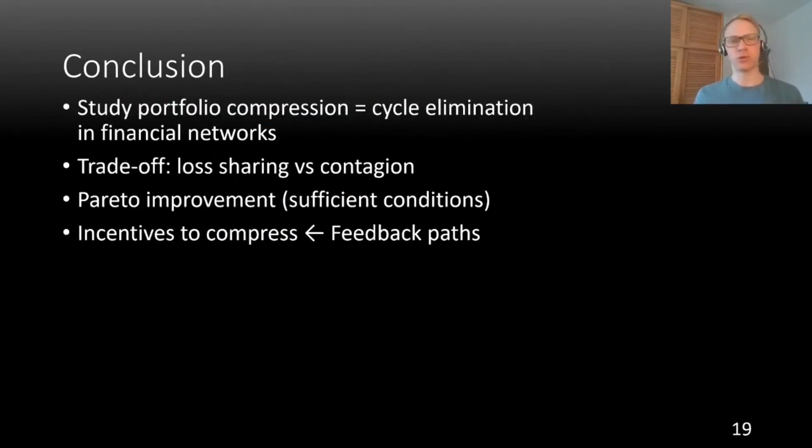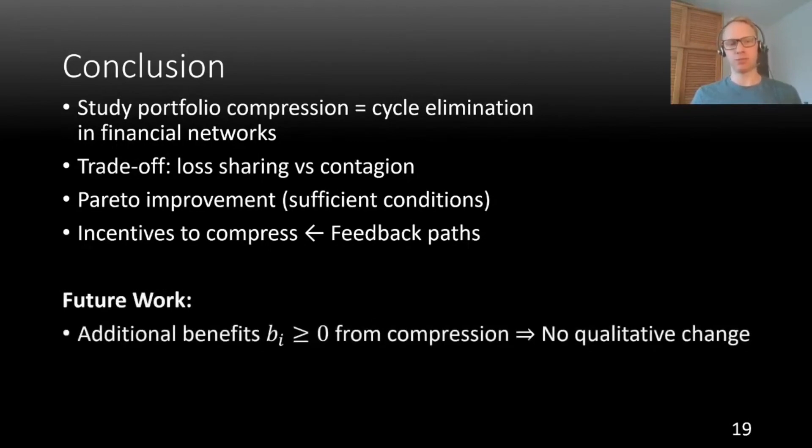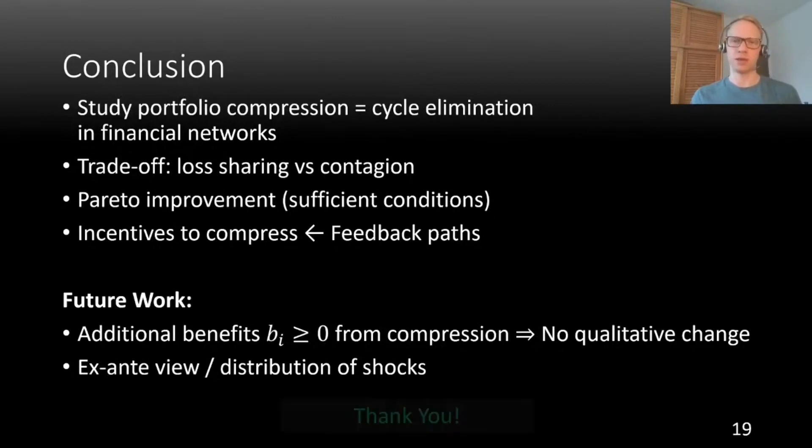To conclude, today I have talked about portfolio compression, which is the elimination of cycles in financial networks. I have shown that, contrary to conventional wisdom, portfolio compression is not always beneficial for everyone, but there is a trade-off between loss-sharing and contagion. I have shown to you that we can find sufficient conditions under which compression is a Pareto improvement, and I have shown to you that the incentives to compress for banks depend on the presence of feedback paths in the network. I briefly want to talk about two pieces of future work. One might include in the model some additional benefits banks derive from compression, for example due to reduced capital constraints. We have briefly checked this in a very simple extension, and there was no qualitative change but only some quantitative change to our results. And the other one is to take an ex-ante view and assume that banks are somehow maximizing expected equity subject to distribution of shocks. These types of results are notoriously hard to achieve in financial networks and would likely require new methods compared to what we have done here. Thank you very much for your attention.